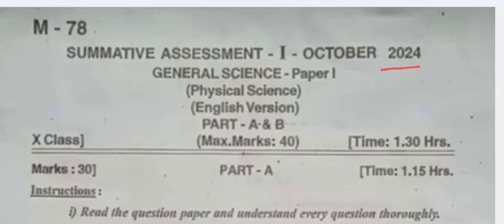in the state of Telangana. Subject is General Science, that is Paper 1 and Physical Science, English version, Part A and B. Maximum marks: 40. Time duration is 1 hour 30 minutes.